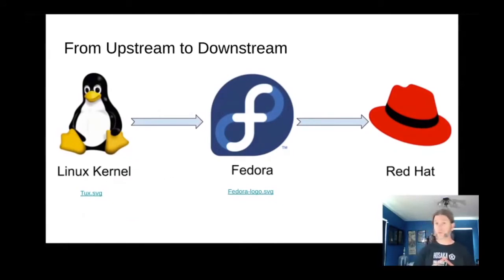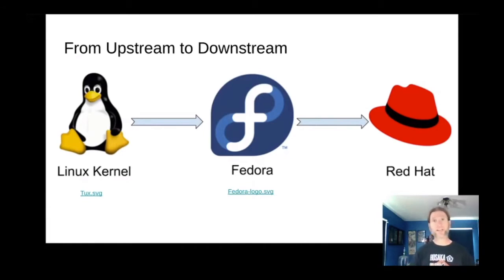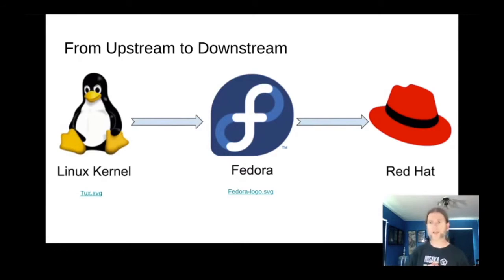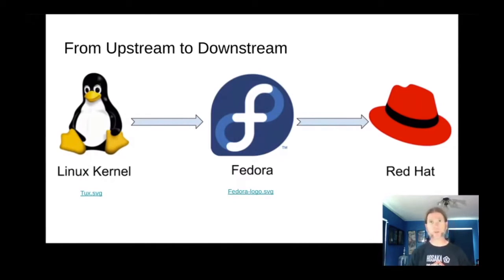Here's a flow from upstream to downstream. The Linux kernel source repository is the top of our upstream. Fedora takes that, makes the settings they need for the kernel they provide — Fedora's kernel is downstream to the Linux kernel source. Then Red Hat comes along and takes a specific version of Fedora as its base to build a major release of Red Hat Enterprise Linux, making RHEL downstream to Fedora. So Fedora is both upstream and downstream — upstream to RHEL, and downstream from the Linux kernel.